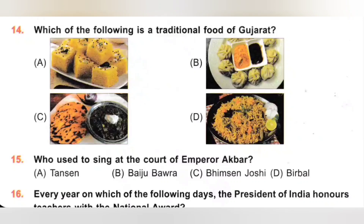15th. Who used to sing at the court of Emperor Akbar? A. Tansen, B. Baiju Bawra, C. Bhimsen Joshi, D. Birbal. Tansen used to sing at the court of Emperor Akbar. Option A is the correct answer.